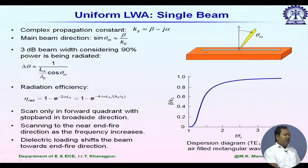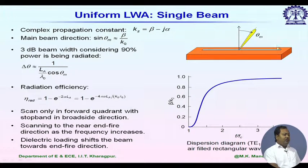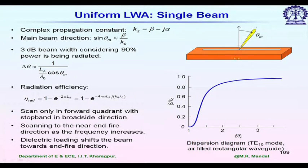Some other properties: this type of antenna scans only in the forward quadrant. It can have near-endfire radiation when beta/k_0 approaches one, and if a dielectric material is used inside, the radiation pattern shifts to the endfire direction. We will take a break and then continue with this antenna.